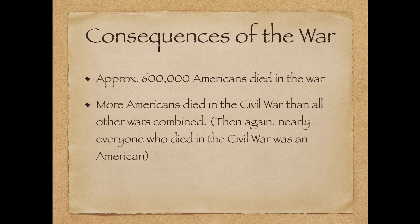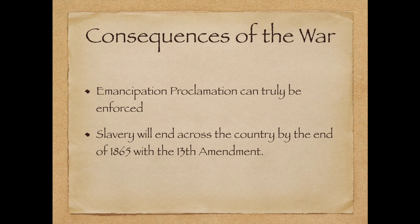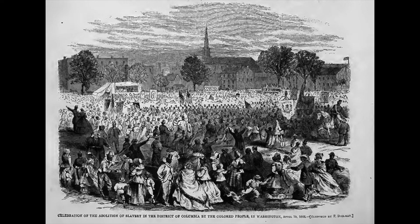There were numerous consequences of the Civil War. First, approximately 600,000 American lives were lost in battle — more Americans died in the Civil War than in all other wars the United States has participated in combined. Additionally, the war strengthened the federal government and weakened the power of individual states, and the stronger federal government paved the way for America to grow into a world power. Finally, the Union victory meant an end to slavery. Although the Emancipation Proclamation had no direct effect on freeing slaves during the war, it ended slavery in the rebelling states as they surrendered. By the end of 1865, slavery had been completely abolished throughout the Union. Now the only question left was how to put the country back together.